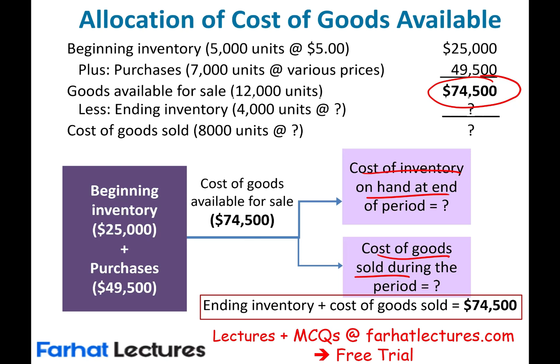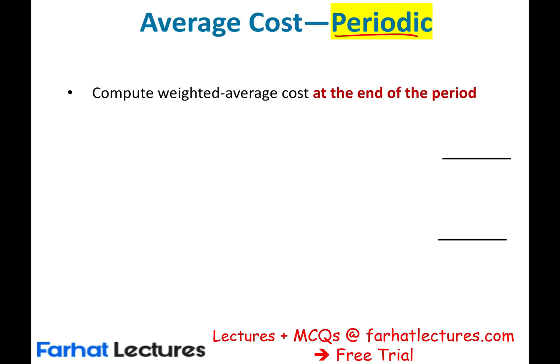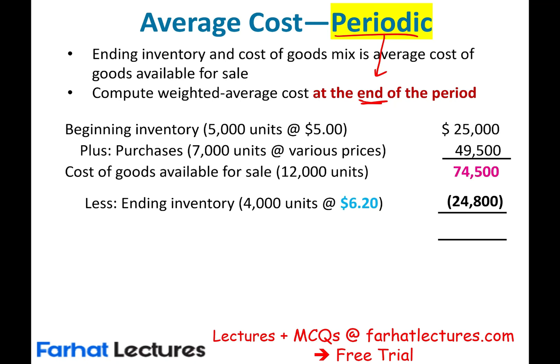Having this picture in mind, we can start to dive into the various methods. The first method is the average cost — specifically the average periodic cost. The average cost means: compute an average cost for all the inventory that you purchased and use that average cost. Under the periodic average cost method, we compute that average cost at the end of the period.